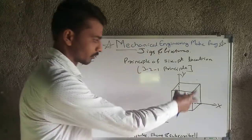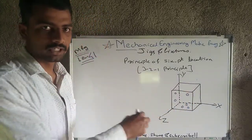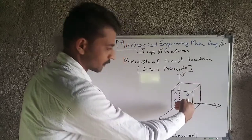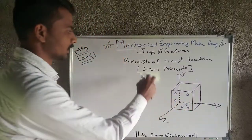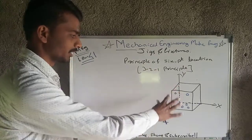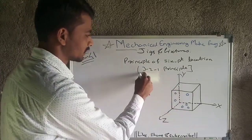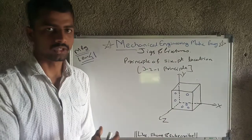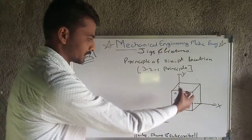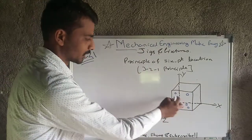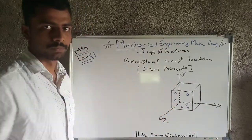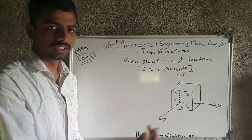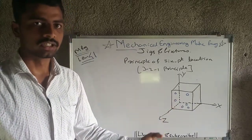A work piece has six planes — top, bottom, left, right, front, and back. From these six planes we select any three planes. On one plane there will be three locating points, on another plane there will be two locating points, and on the remaining plane one locating point. So in total we have six points — three plus two plus one — on three consecutive planes, and those locator points will completely locate the work piece.